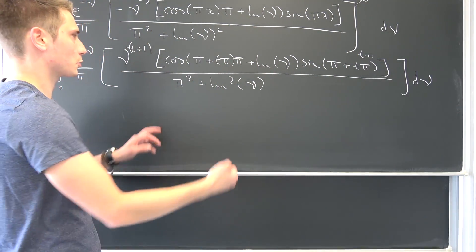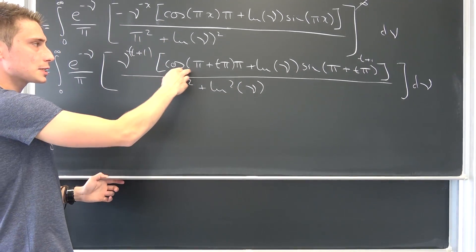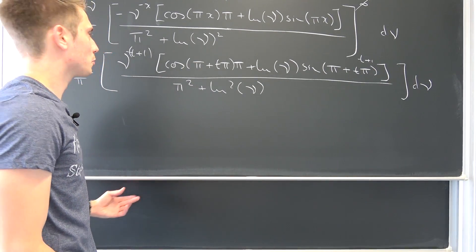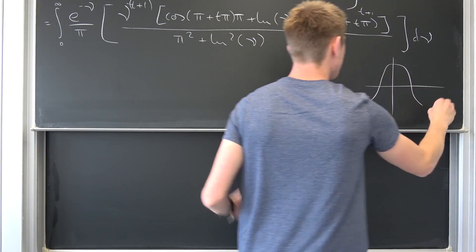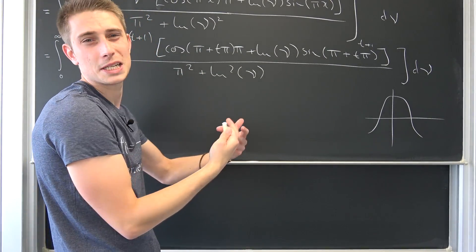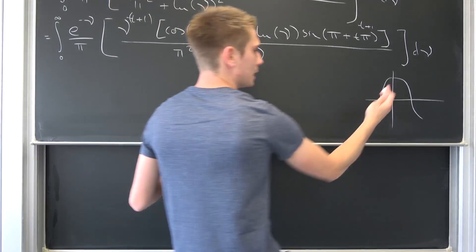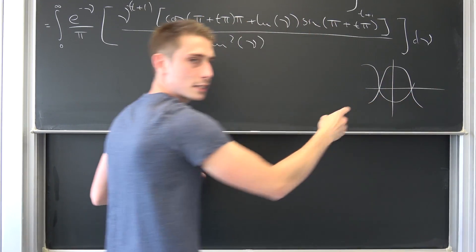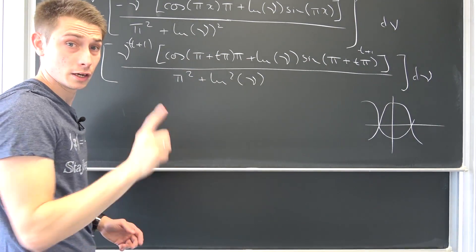Let us do some simplifications, because we can actually play around with the cosine and the sine right here — this is just a shift in the cosine and the sine. If we take a look at the graph, the cosine in the normal case shifted by π units means shifting π/2 to the left and π/2 to the right, which leaves us with a negative cosine wave. So cosine(π + t·π) is actually just negative cosine(t·π).